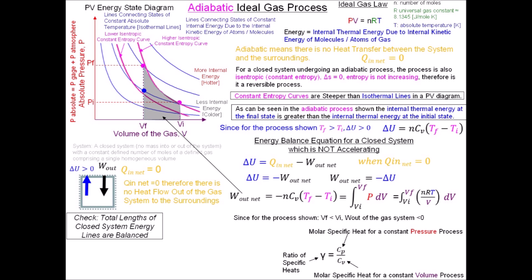In these videos I've discussed molar specific heat, which has dimensions of energy per absolute temperature per mole. There is also a mass specific heat, unfortunately shown with the same nomenclature C sub P or C sub V, with dimensions of energy per absolute temperature per mass. The mass specific heat can be obtained from the molar specific heat by dividing by the molecular weight of the gas.